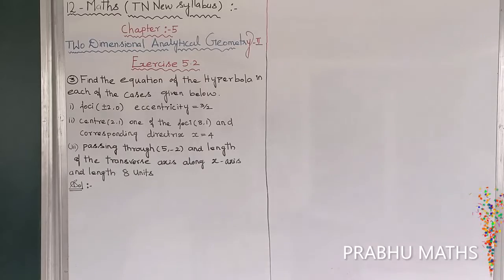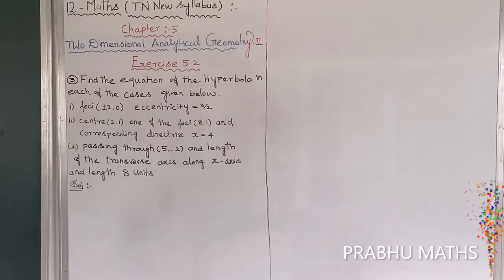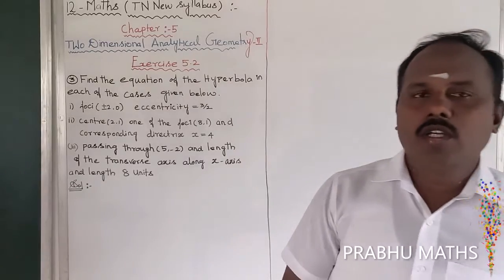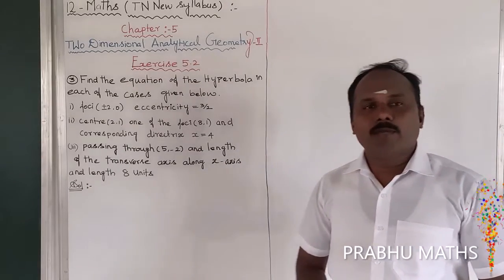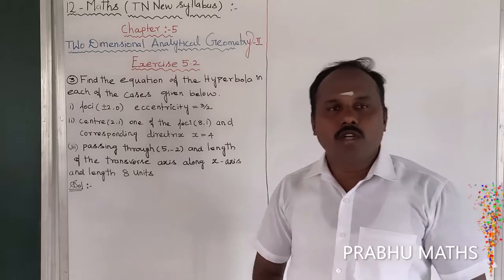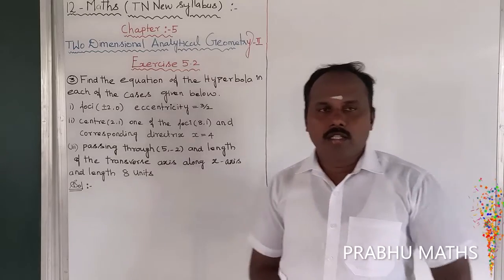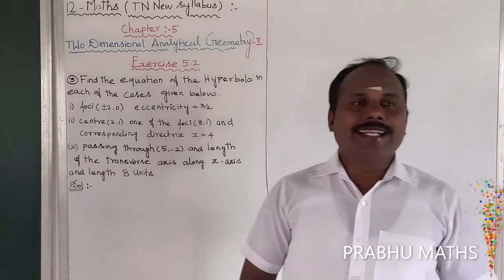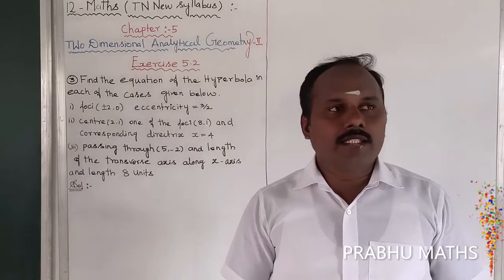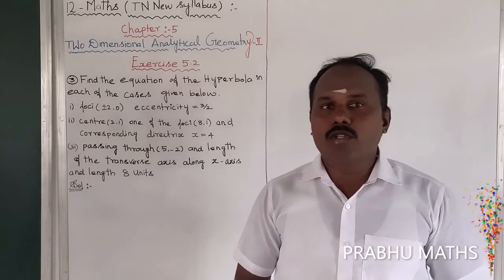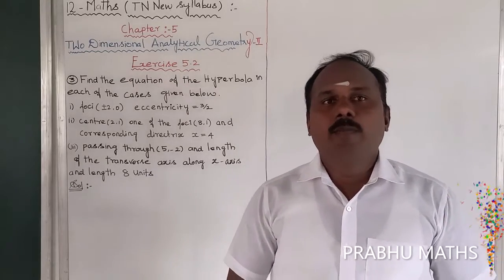Find the equation of the hyperbola in each of the following cases. First of all, the hyperbola general form is x² / a² − y² / b² = 1. The standard general form is (x − h)² / a² − (y − k)² / b² = 1.